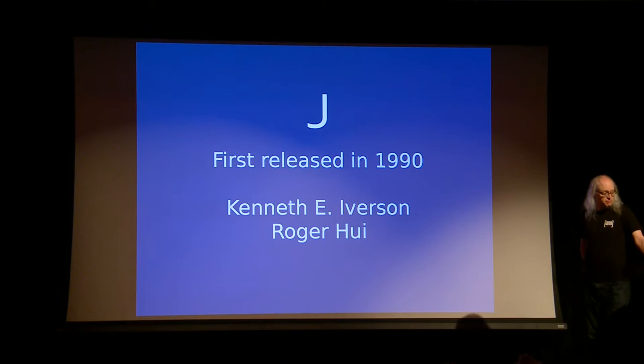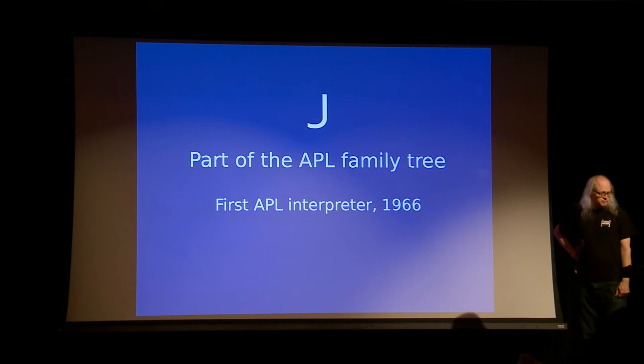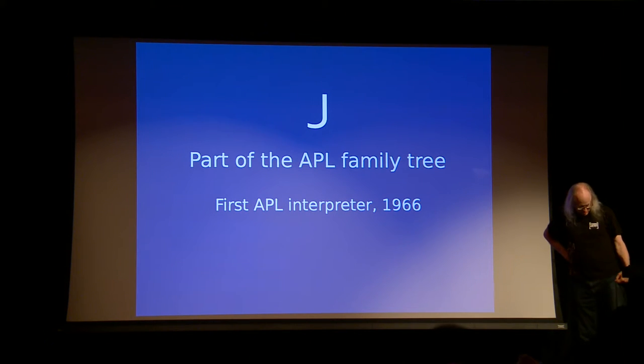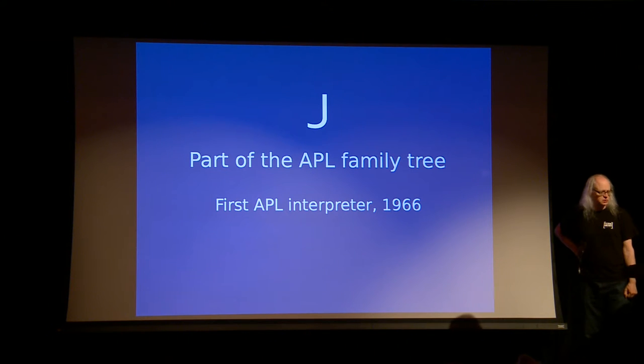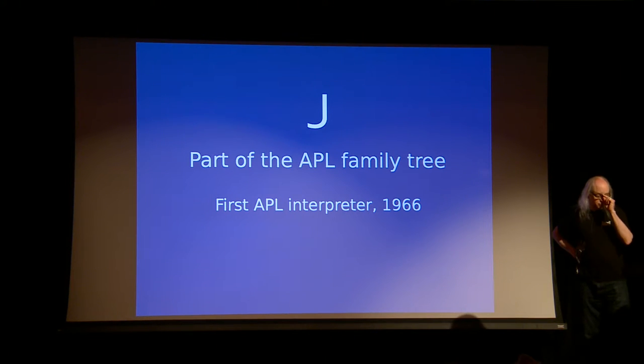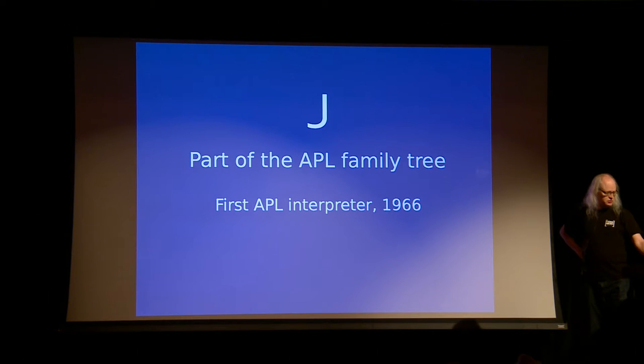J is a programming language designed primarily by Ken Iverson and implemented primarily by Roger Wee. It is part of a long tradition in programming. There was a time when its predecessor was in the top half dozen programming languages in use, I suspect.